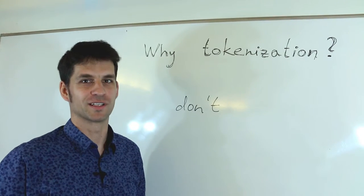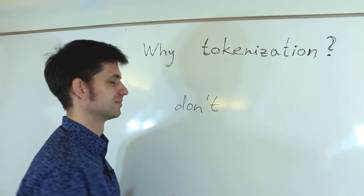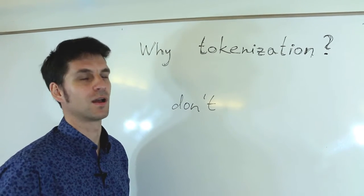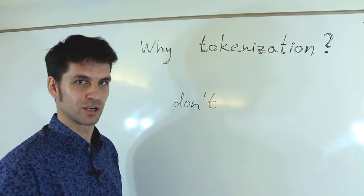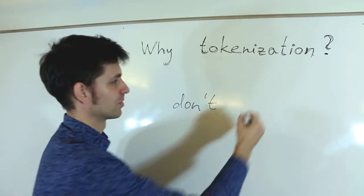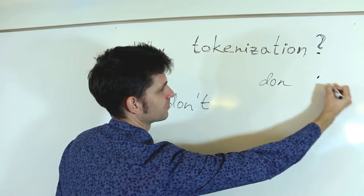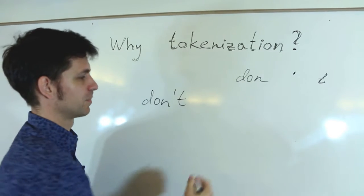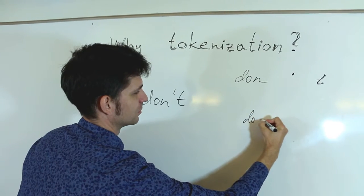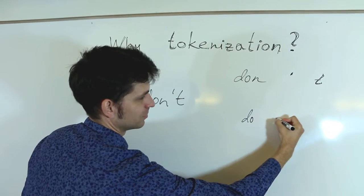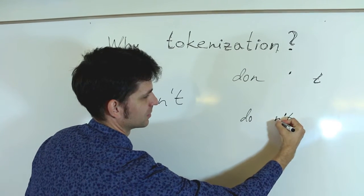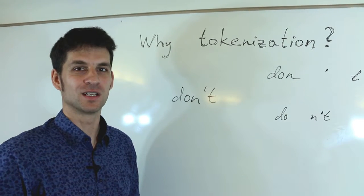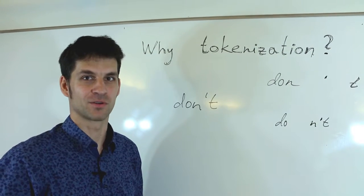But there are certainly counter-examples. Take the word 'don't' — we don't write any space in it, so it could be one token. Or it could be tokenized at the change of Unicode character classes, making it three tokens: D-O-N, apostrophe, and T. And linguistically, the most adequate split would be 'do' and then 'n't'. People have worked on tokenization for a couple of decades and still no standard solution has been found or agreed upon.